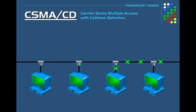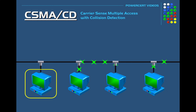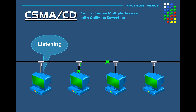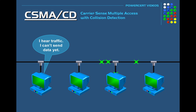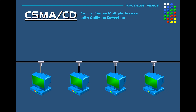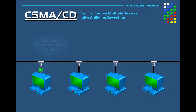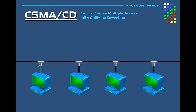Let's say that this computer here wants to send data. First it will sense or listen if there is any traffic on the cable. If it senses traffic, the computer will wait until the cable is idle to send its data. But once it senses that there is no traffic, it'll go ahead and send its data. As it's sending, it will listen for a collision, and if it doesn't sense one, it knows that the data was successfully sent.